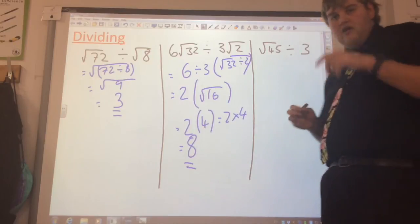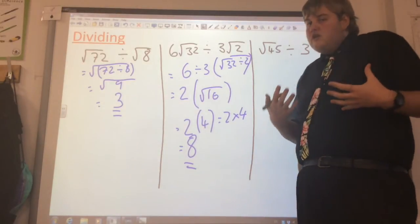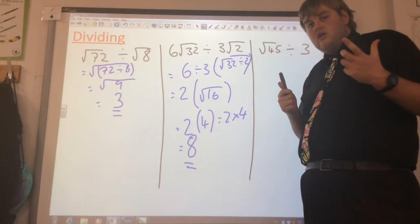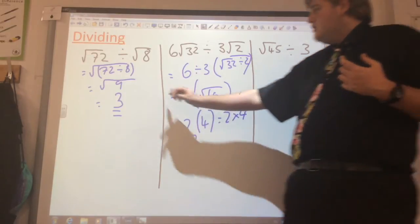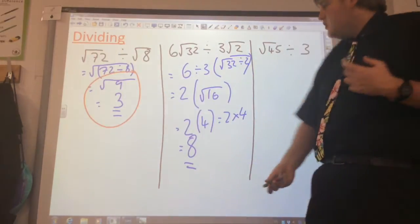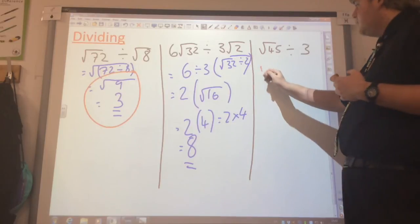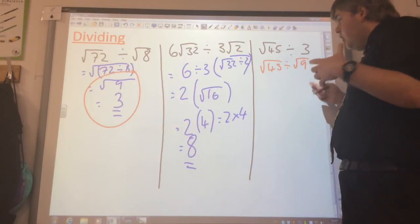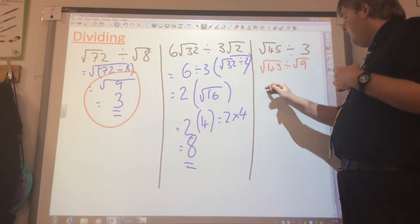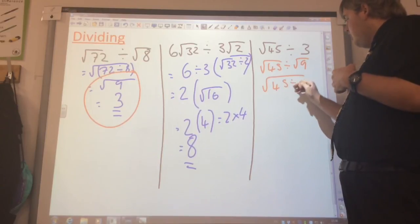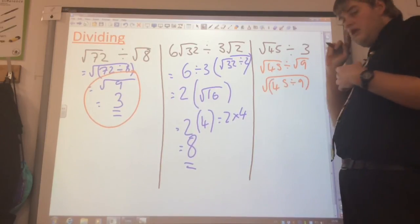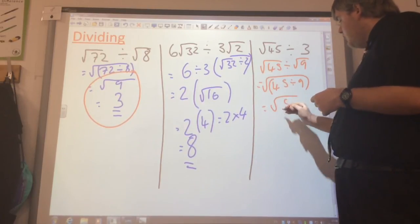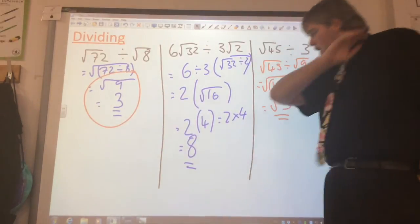Last one, nearly finished, keep on now, I know this has been a long video. This one, root 45 divided by 3. Root 45 isn't a number. So what we need to do is turn this 3 into a square root. So we do 3 squared which is 9, and that becomes our square root. As you can see over here, 3 is the same as the square root of 9. So this question becomes root 45 divided by root 9. Now nice and simple, we'll do it like we just did there. So root 45 divided by 9. 45 divided by 9 is 5, you've got it. So now our answer becomes square root of 5. We can't simplify that. There we're done.